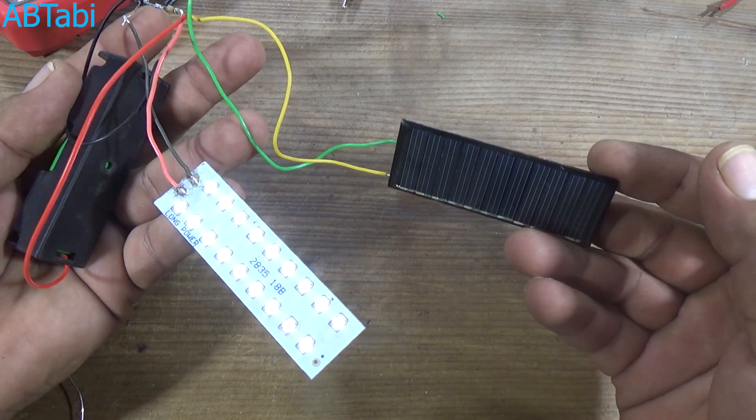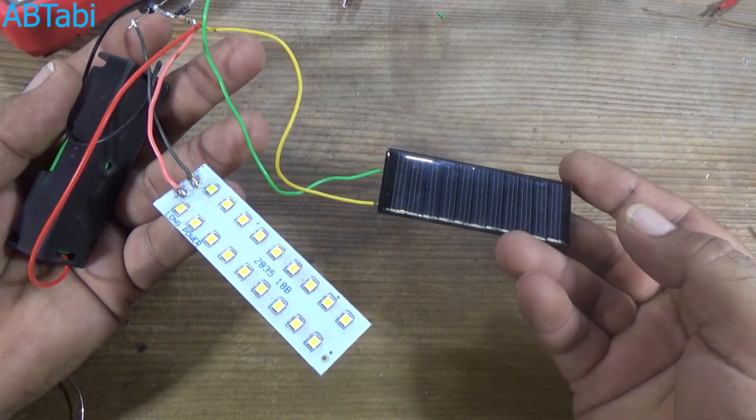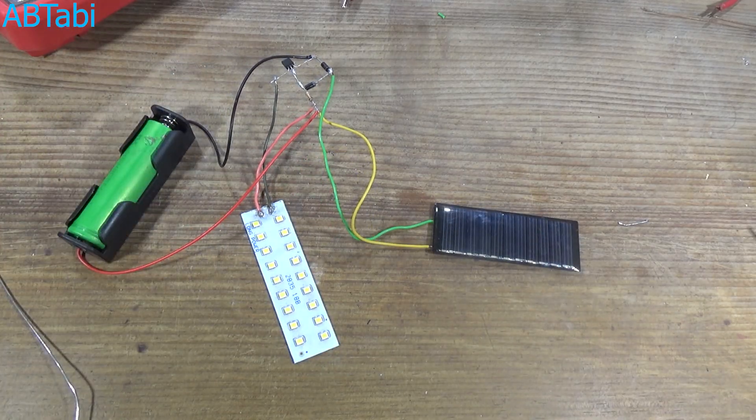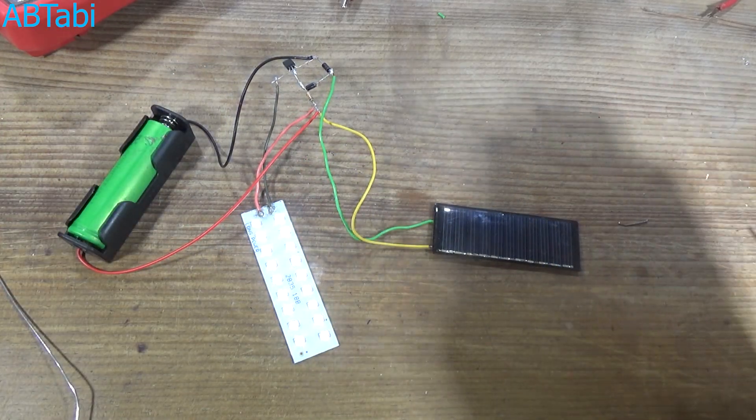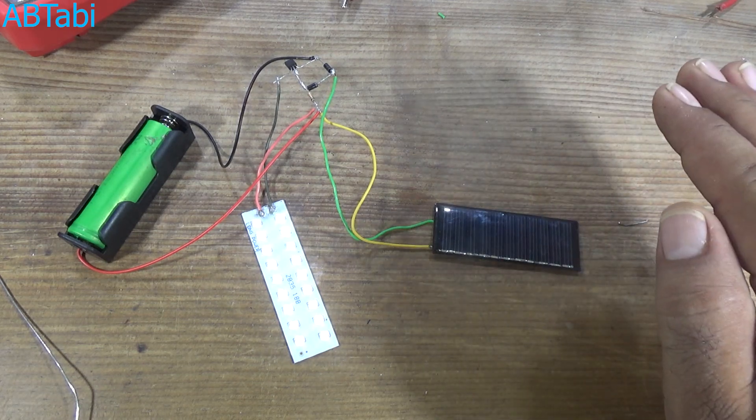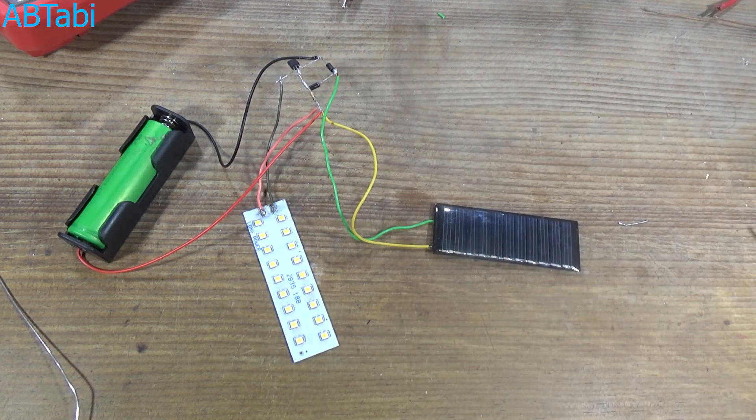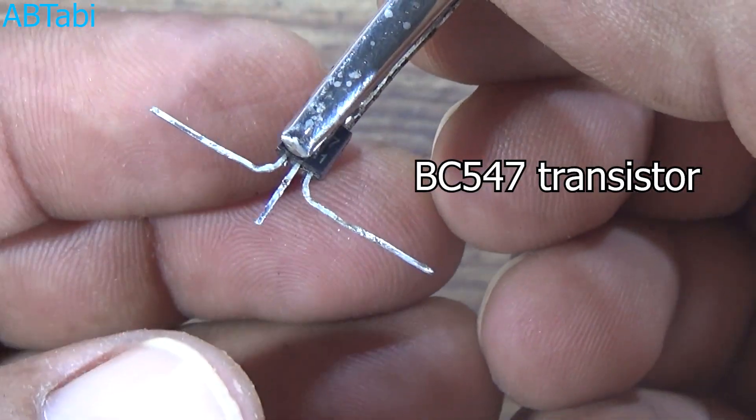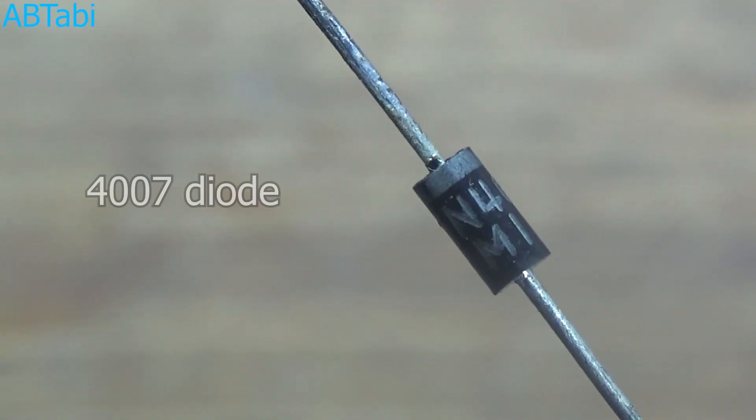Hi friends, welcome to our channel. Today I will show you how to make an automatic charge, automatic on-off LED street light circuit at home. It's a very simple circuit. Circuit components: one transistor BC 547, you can use any other NPN transistor.